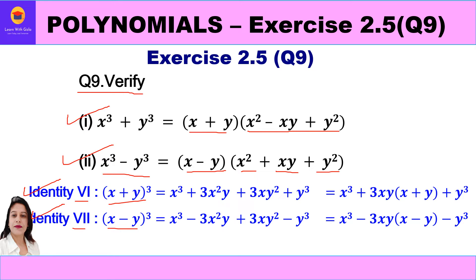Identity 6 is x plus y whole cube, which equals x cube plus 3x square y plus 3xy square plus y cube. Taking 3xy common from the middle terms, we are left with x plus y. Identity 7 is x minus y whole cube, which equals x cube minus 3x square y plus 3xy square minus y cube. Taking minus 3xy common, we are left with x minus y. These two identities will be used to verify both parts.